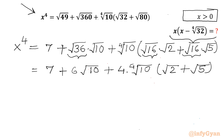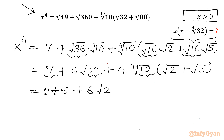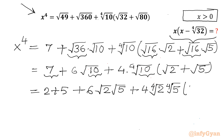Now I will split 10 as 2 times 5. I will write 7 as 2 plus 5, and similarly 6 times √(2×5), so: (2 + 5) + 6 times √2 times √5, plus 4 times ⁴√2 times ⁴√5, and in bracket (√2 + √5) as it is.